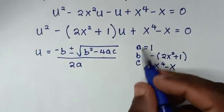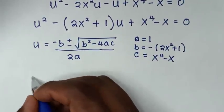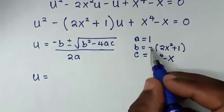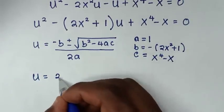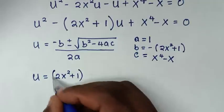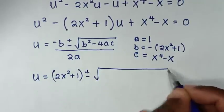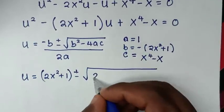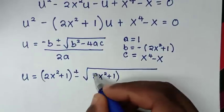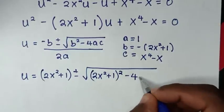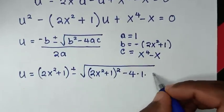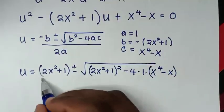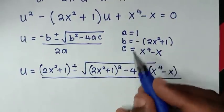Substituting a, b, c into the quadratic formula: u equals negative b — since b is negative, it becomes positive — so positive bracket 2x squared plus 1, plus or minus square root of b squared, which is bracket 2x squared plus 1 squared, minus 4 times a times c, which is x to the power 4 minus x, all over 2.